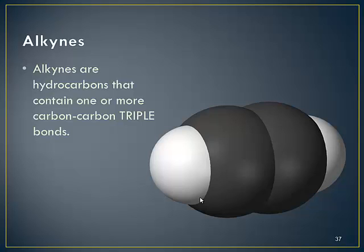The last class of hydrocarbons we have to talk about are alkynes. Just like alkanes and alkenes, alkynes are hydrocarbons, meaning they're made out of carbon chains with hydrogens attached, but now they contain one or more carbon-carbon triple bonds. If two carbons are triply bonded, that means they don't share one or two pairs of electrons — they share three pairs of electrons, meaning these bonds are now very, very strong.